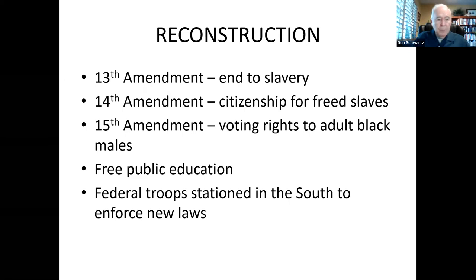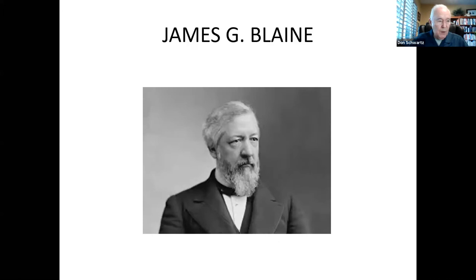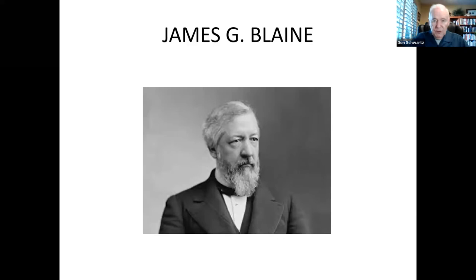The Republican Party expected to nominate a popular senator from Maine by the name of James G. Blaine. But when it was revealed that Blaine had some involvement in a railroad scandal, the Republicans nominated Rutherford B. Hayes, the governor of Ohio. During the Republican nominating convention, it took seven ballots for the delegates to reach an agreement on Hayes, giving a sense that he was a compromise candidate. Hayes agreed that he would serve only one term if he won the election.